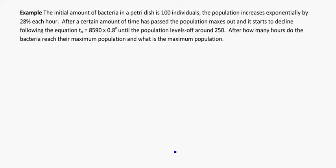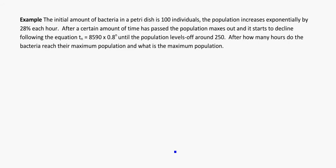The second example here. The initial amount of bacteria in a petri dish is 100 individuals. The population increases exponentially by 28% each hour. Increases exponentially, that's giving me a giveaway here that I'm dealing with a geometric sequence. And since I'm dealing with an increase, for the r, it's going to be 1 plus 28 over 100. So we get 1.28 for r for the first one. And this initial amount, that's telling me my a, so a is equal to 100 for the first part here. After a certain amount of time has passed, the population maxes out and it starts to decline, following the equation Tn equals 8590 times 0.8 to the n.